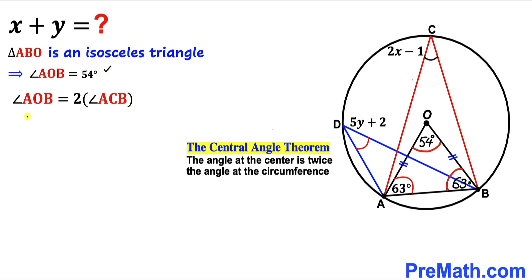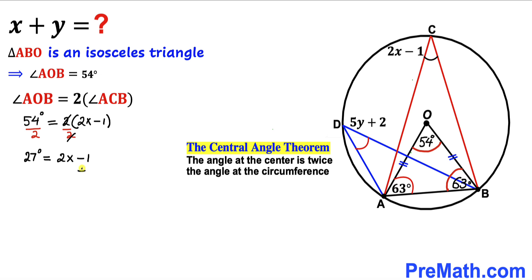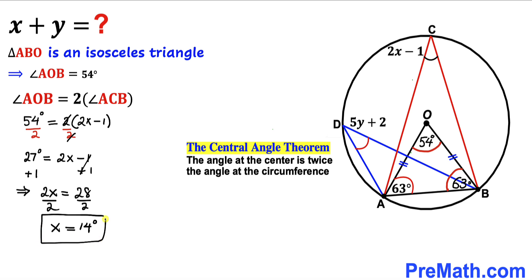We know angle AOB is 54 degrees. So 54 degrees equals two times angle ACB, which is represented by 2X minus 1. Dividing both sides by 2 gives us 27 degrees equals 2X minus 1. Adding 1 to both sides gives 2X equals 28. Dividing both sides by 2, our X value turns out to be 14.